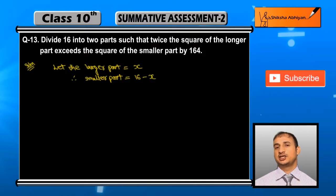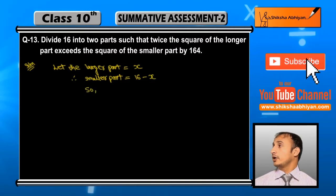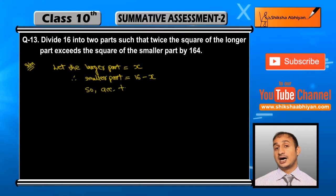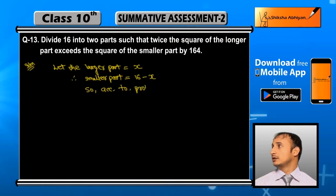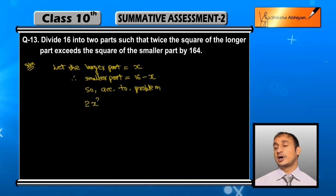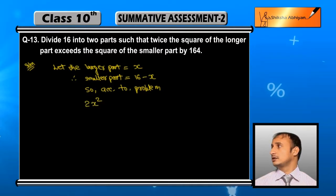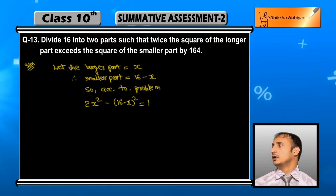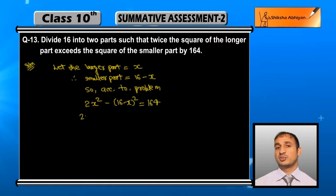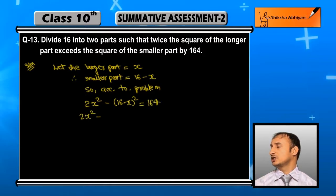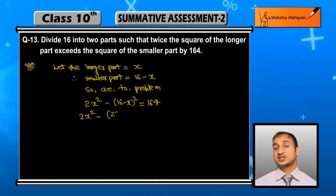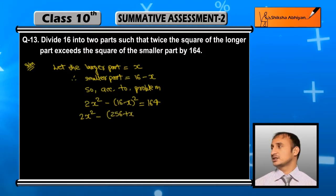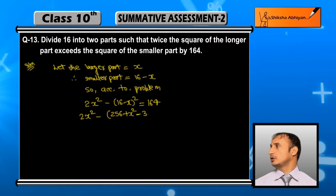According to the question, larger part के square का double है 2x², minus smaller part का square — इन दोनों का difference 164 है। So: 2x² − (16 − x)² = 164. जब आप bracket open करेंगे तो 16 का square is 256, plus x² minus 32x, is equal to 164.